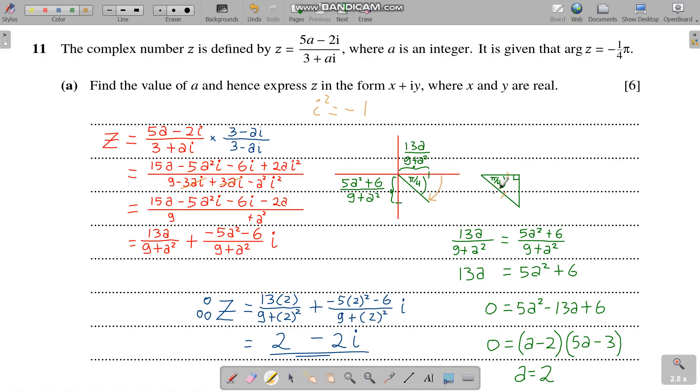Minus means going clockwise from positive x or positive real axis. Pi over 4 means 45 degrees, which means what we have is an isosceles right angle triangle, which means this length is the same as this length.